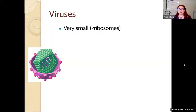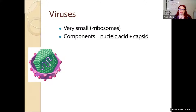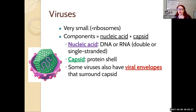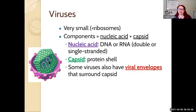A virus is very small — less than the size of a ribosome usually. Its components include a nucleic acid inside and a capsid on the outside, which is a protein shell to hold it. That nucleic acid could be DNA or RNA, single- or double-stranded. Some viruses also have a viral envelope on the outside — think of it as the foil wrapper on a peanut butter cup — which helps it attach to cells and kind of hide it.